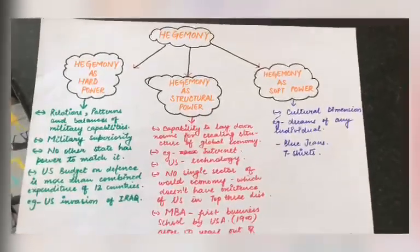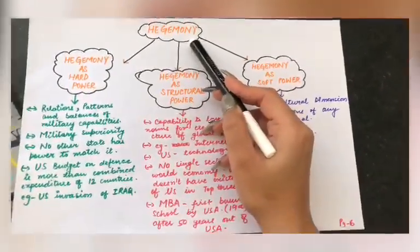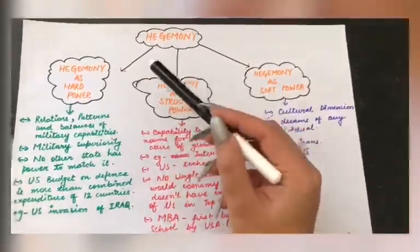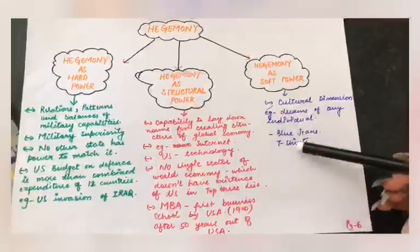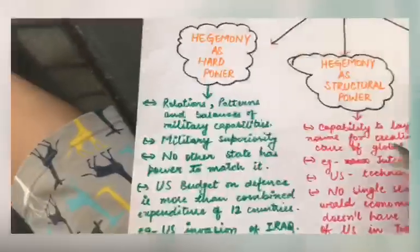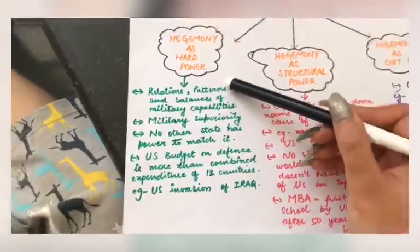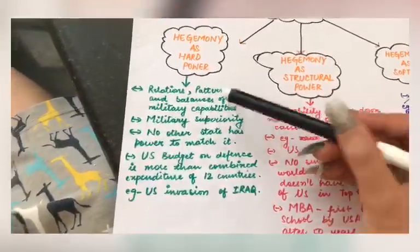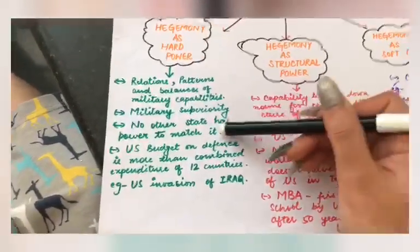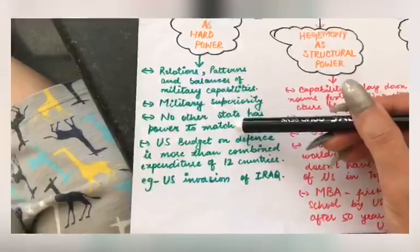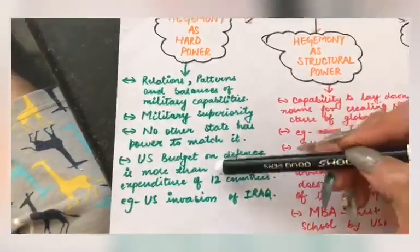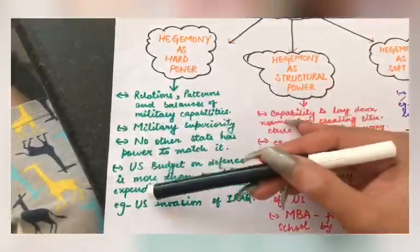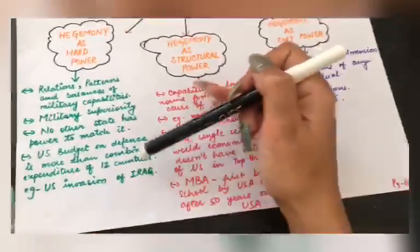Now we come to the main topic of the chapter: what is hegemony? I have already told you about leadership, authority, dominance, and all these things. Now, how was the US hegemony established? I have made a flow chart as I used to do in class. The first form is US hegemony as military superiority — hard power. No other state had the power to match the US military. The combined military expenditure of 12 countries was less than that of the US. A big example is the US invasion of Iraq.